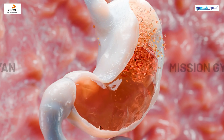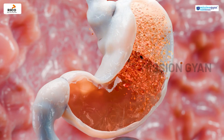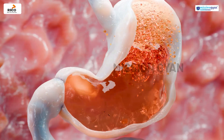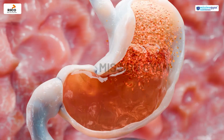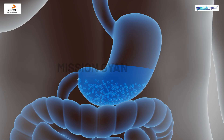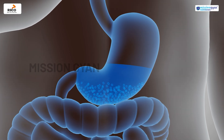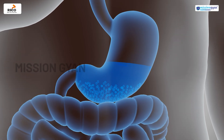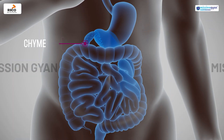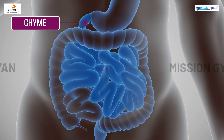The acid kills harmful bacteria and creates an acidic environment for digestion. This semi-fluid mass of partly digested food called chyme then moves to the small intestine.